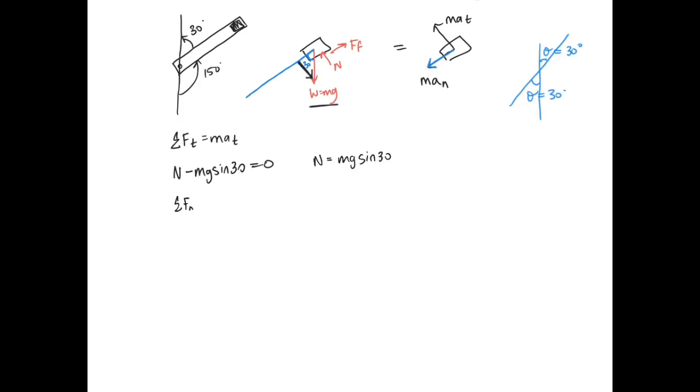In the normal direction, summation of forces equals man. The summation of forces in the normal direction will be here, the cosine component of this triangle, and it's moving in the right direction, the normal direction, so it's going to be positive. And then we have minus the force of friction that's holding it up. So we have mg cos 30 minus the force of friction is equal to man. Normal acceleration is v squared over rho, so this is also equal to mass times v squared over rho. So we can rewrite this as force of friction is equal to mg cos 30 minus m v squared over rho.